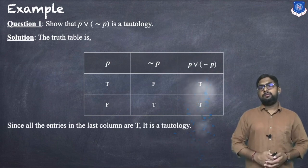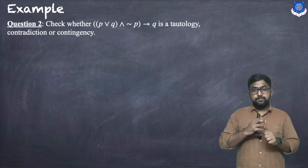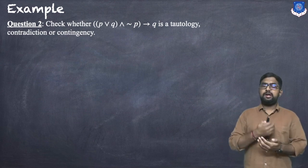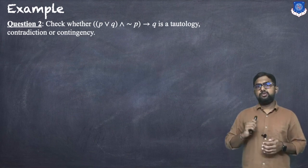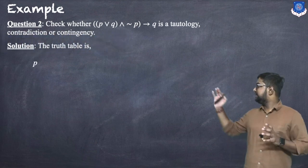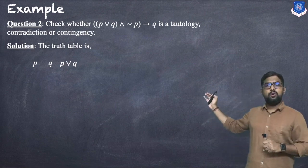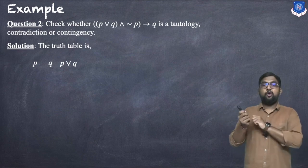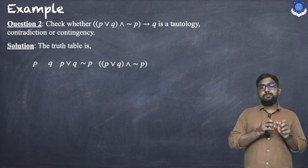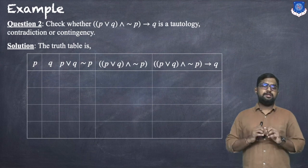The second example: check whether (p∨q)∧¬p → q is a tautology, contradiction, or contingency. We create a truth table with columns for p, q, p∨q, ¬p, (p∨q)∧¬p, and the final implication statement.